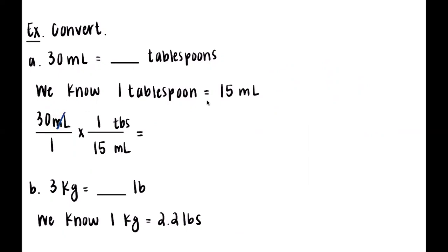The milliliter over milliliter cancels out based on fractions. Now we see what's left. Remember, when we multiply fractions we multiply the numerators with the numerators and the denominators with the denominator. In the numerator we have 30 times 1, which is 30. In the denominator we have 1 times 15, which is 15. Then 30 divided by 15 simplifies to 2 tablespoons.